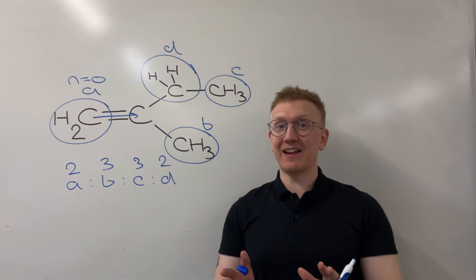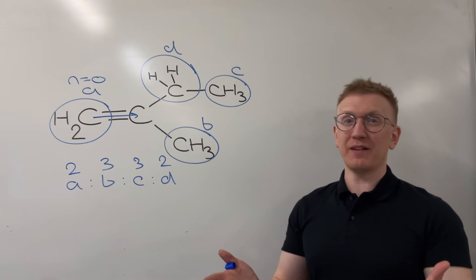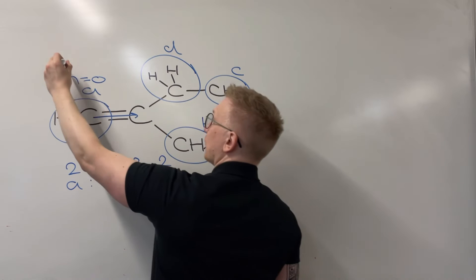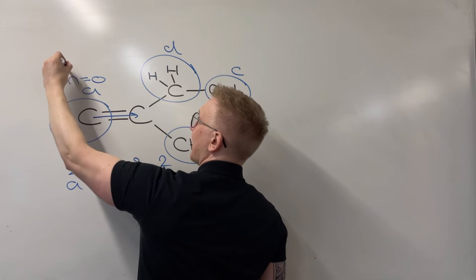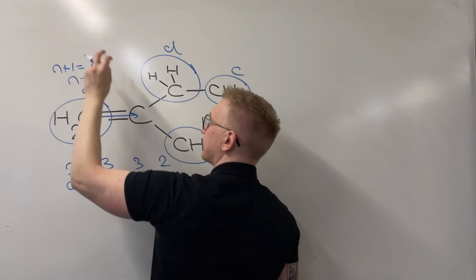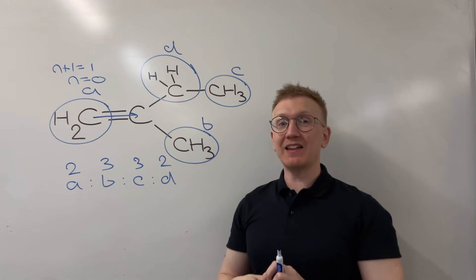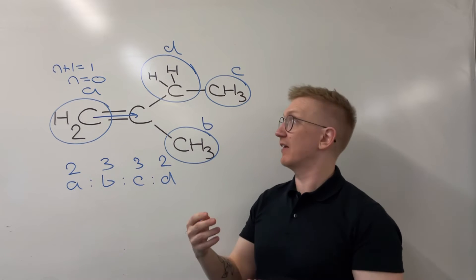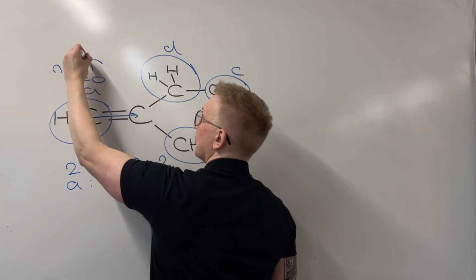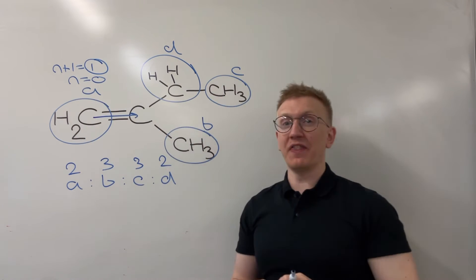Now that's not a bad thing necessarily. It just means the peak isn't going to look as impressive as it could be. Because what we're going to see for A is using our N plus one rule, which is now one, the peak that we would expect to see for environment A is just going to be a singlet. And I know it's a singlet because that N plus one equaled one this time.